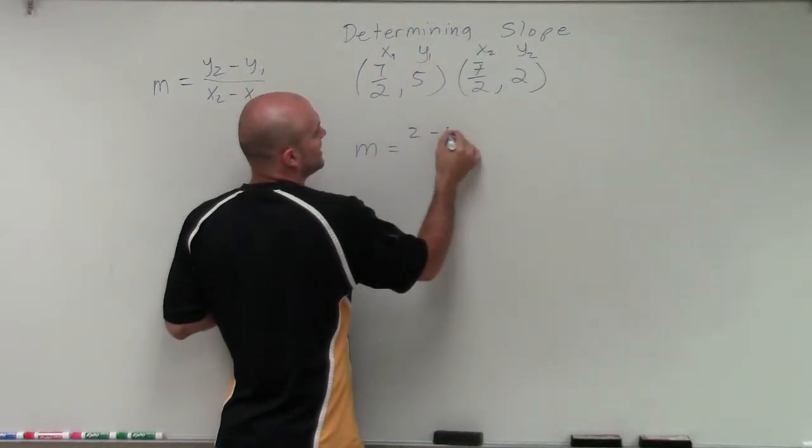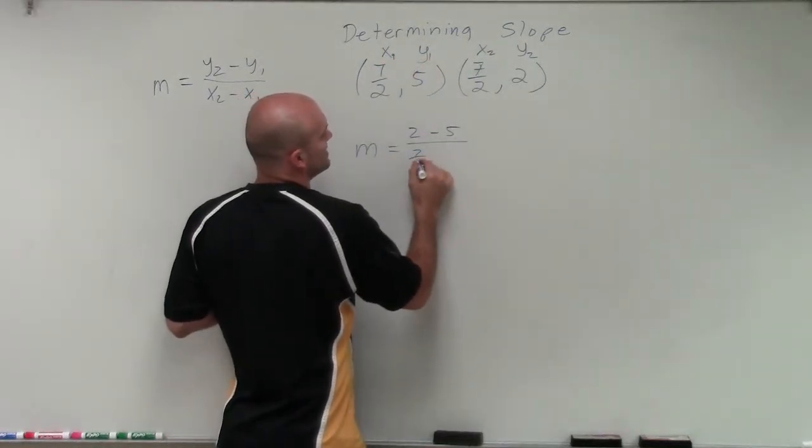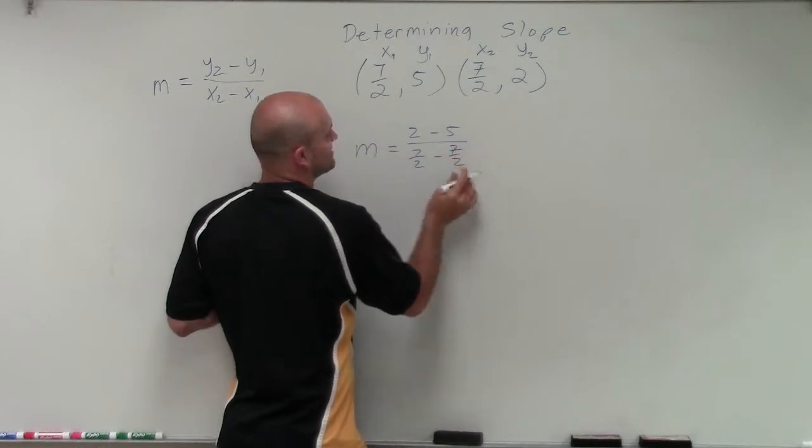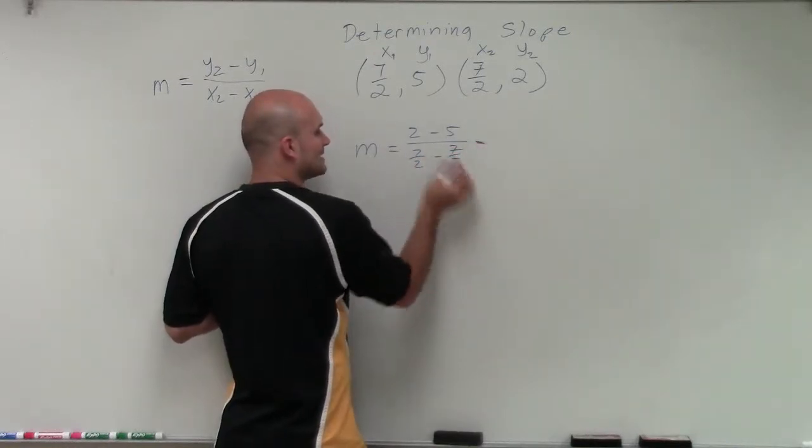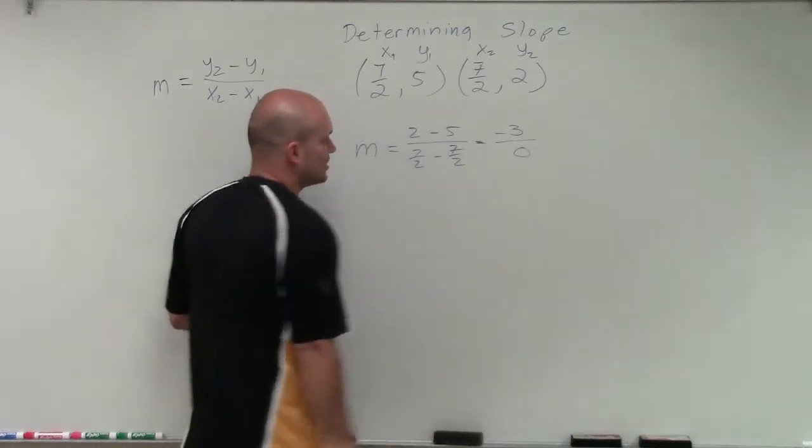So I'll do 2 minus 5 over 7 halves minus 7 halves. Since these have the same denominator, we can subtract them. 2 minus 5 equals negative 3 over 0.